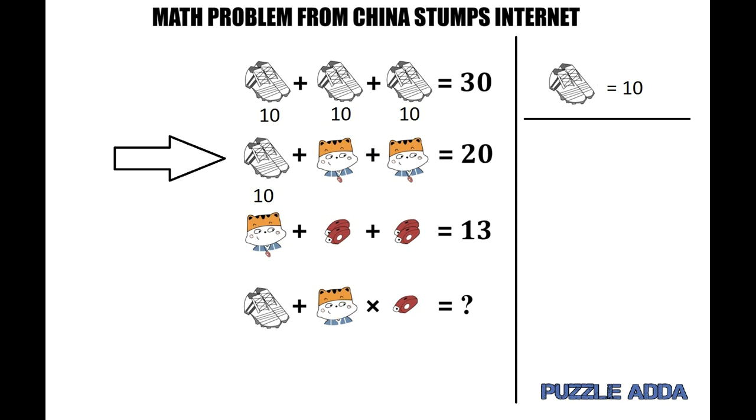From the first equation, the value of a pair of shoes is 10. So replacing that in equation 2, which is 10 plus a cat with a whistle plus a cat with a whistle equals 20, so a cat with a whistle equals 5.